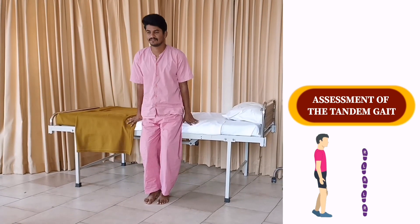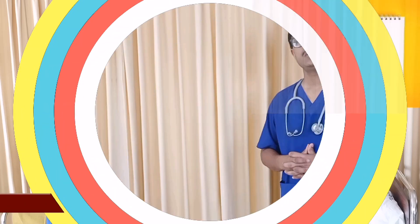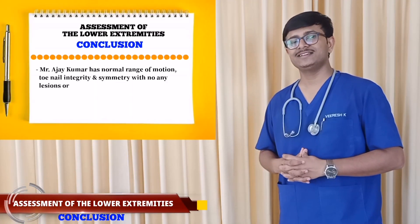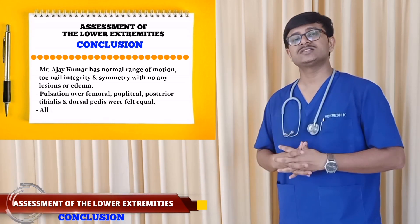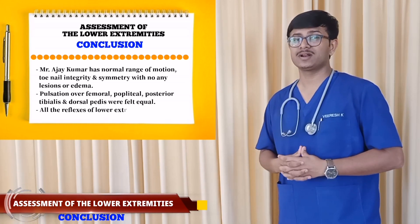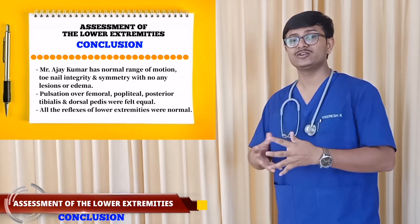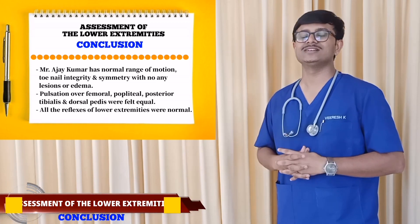This completes the lower extremities examination. Thank you so much for your cooperation. Mr. Ajay has normal range of motion, skin integrity and symmetry with no lesions or edema. Pulsations over the femoral, popliteal, posterior tibialis, and dorsal pedis were felt and equal. All reflexes of the lower extremities were normal.